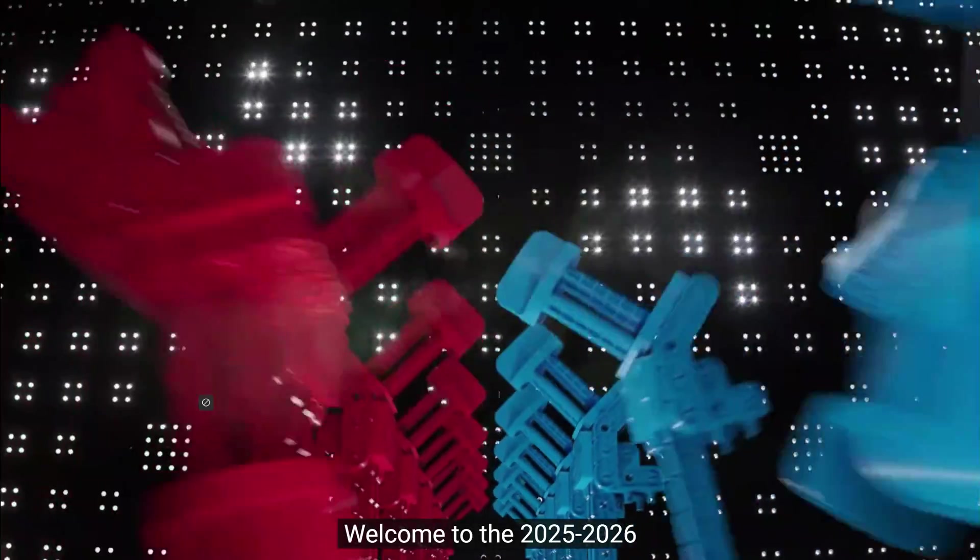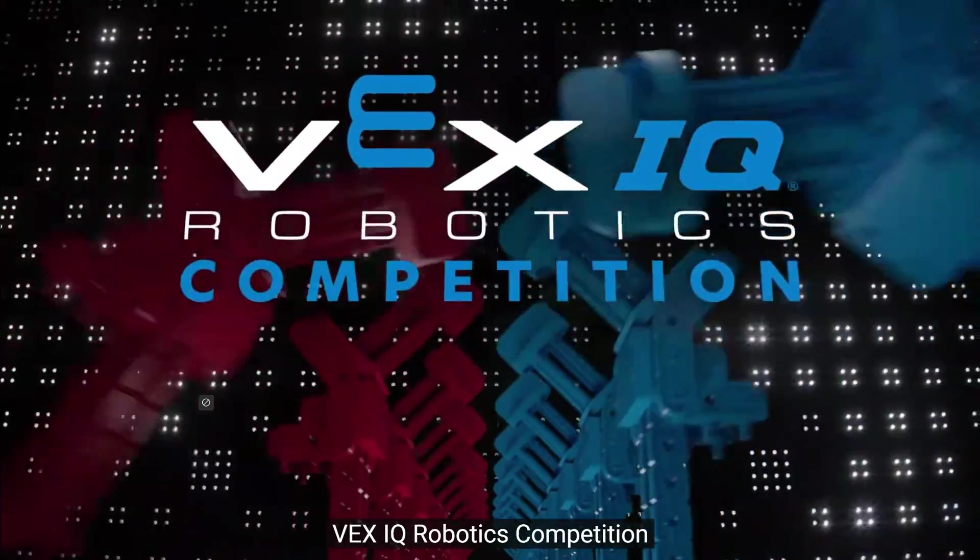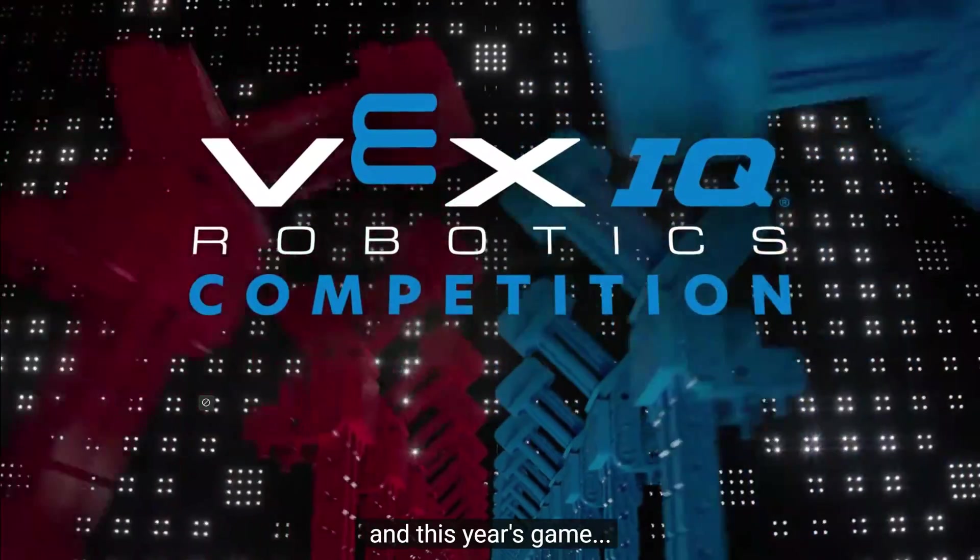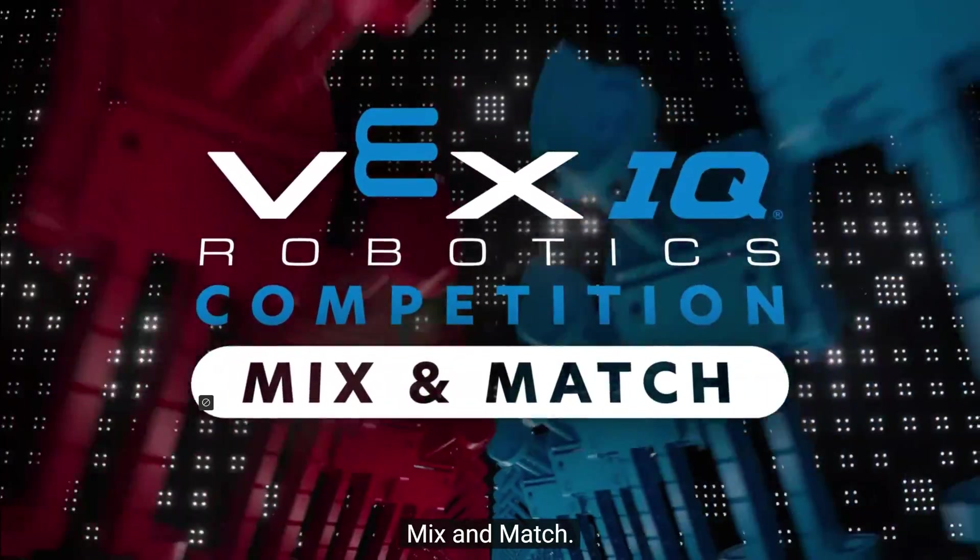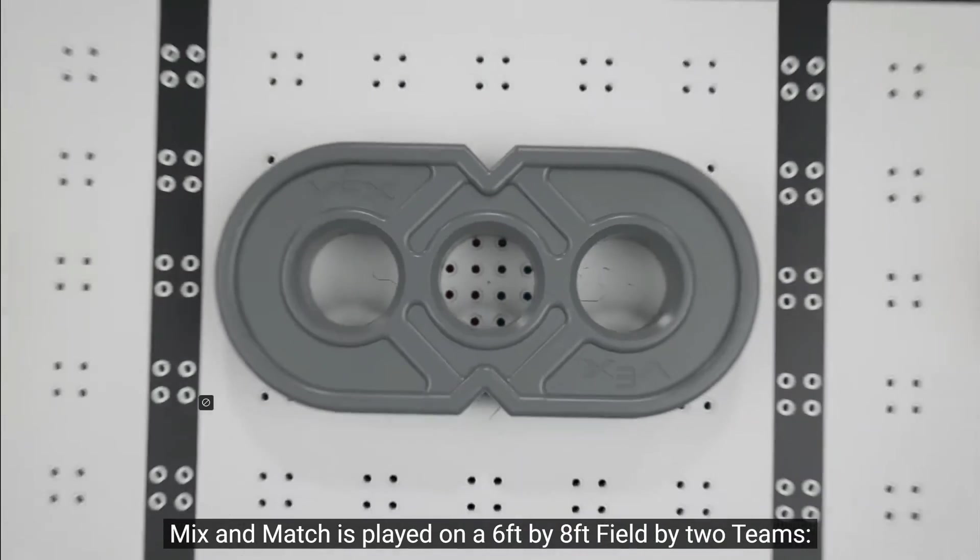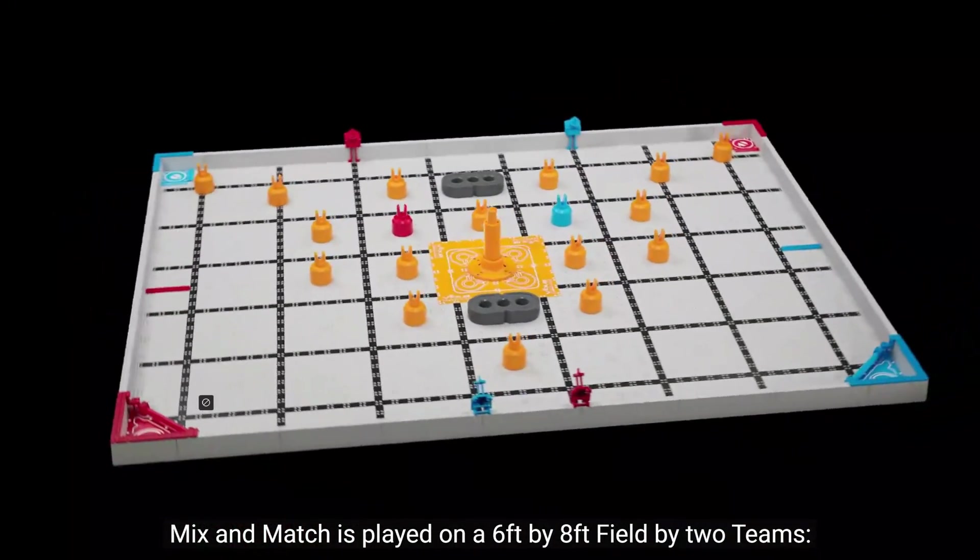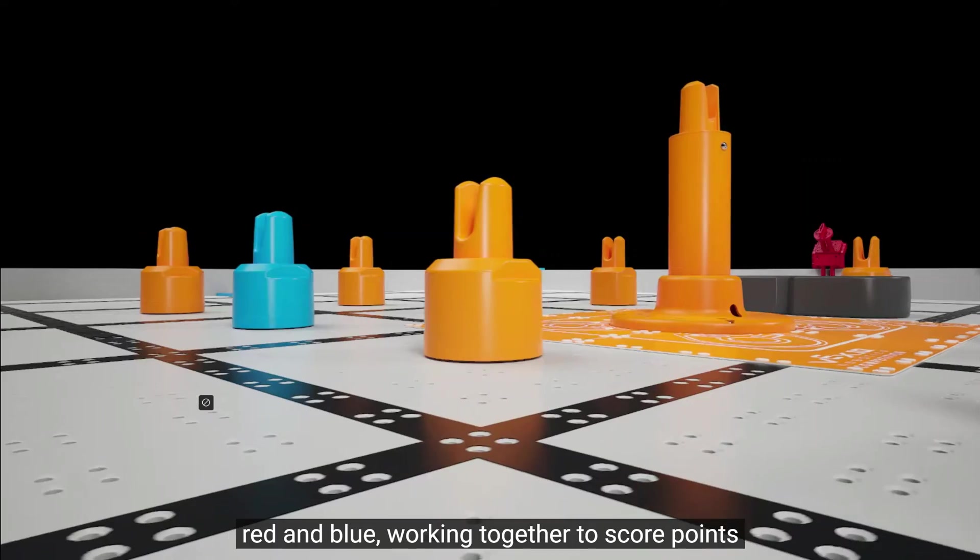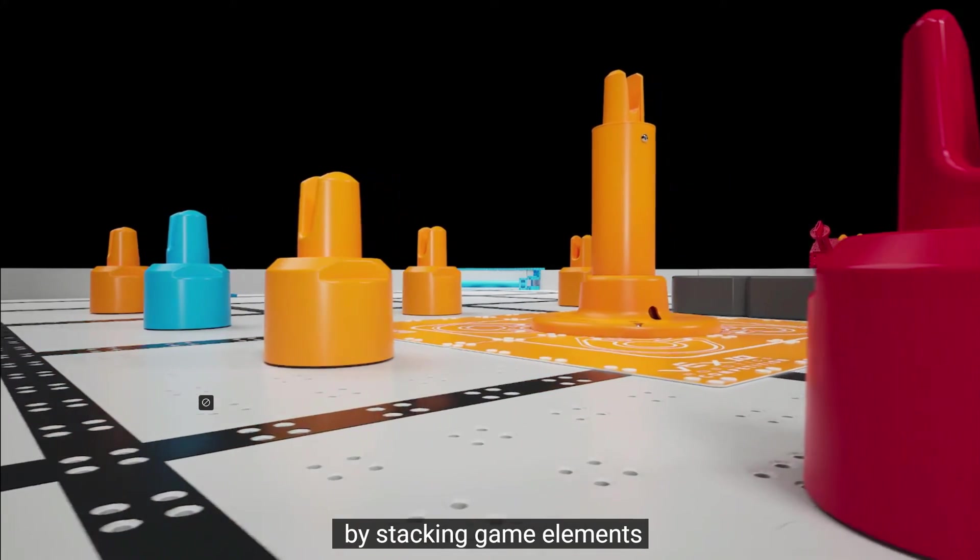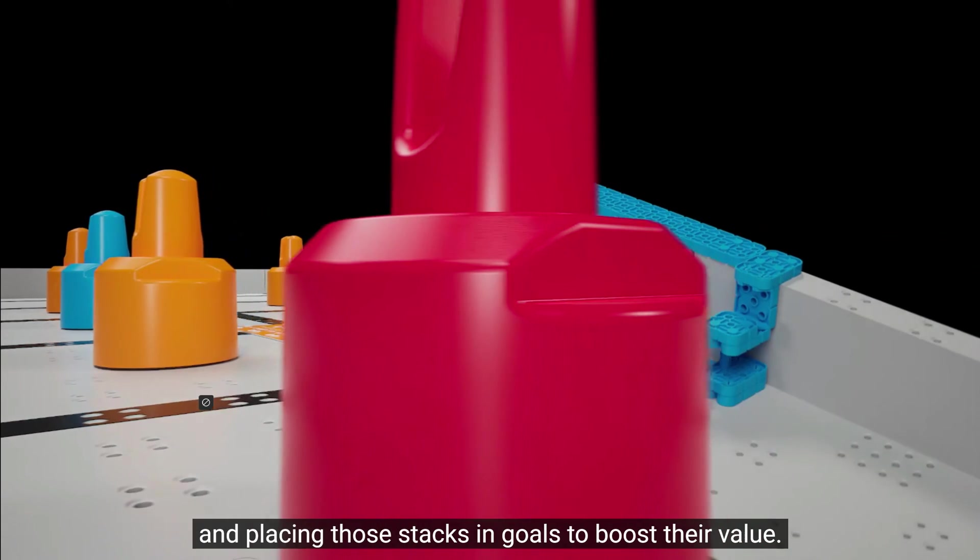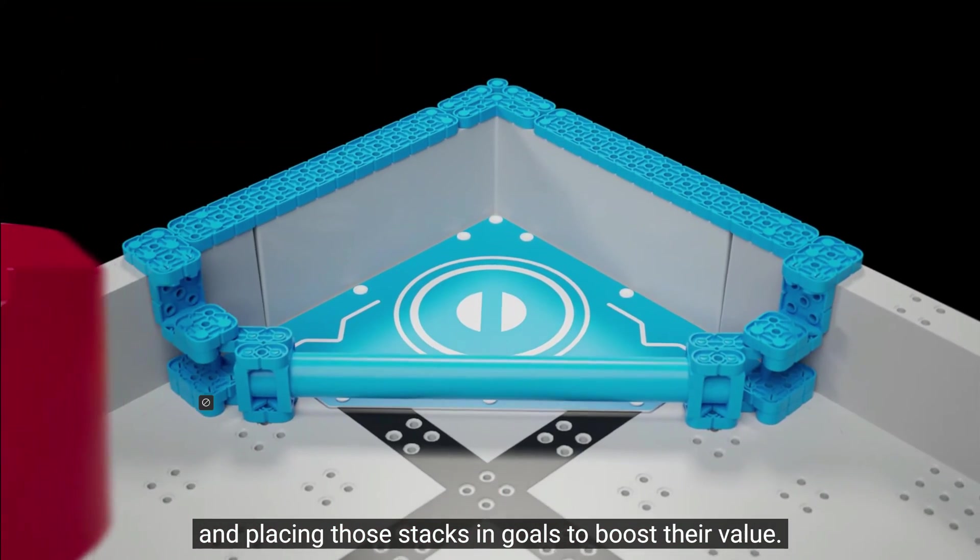Welcome to the 2025-2026 VEX IQ Robotics Competition and this year's game Mix & Match. Mix & Match is played on a six foot by eight foot field by two teams, red and blue, working together to score points by stacking game elements and placing those stacks in goals to boost their value.